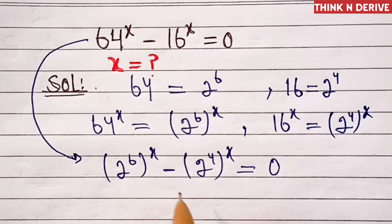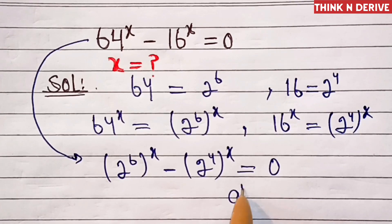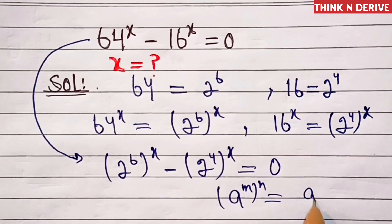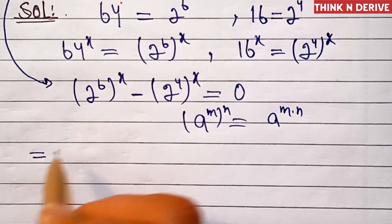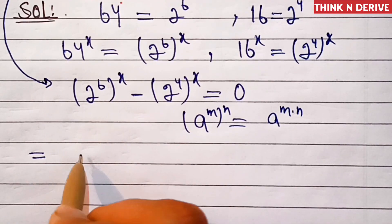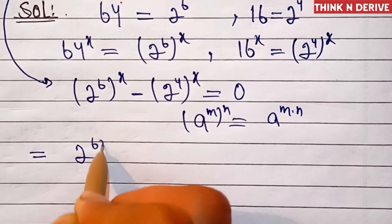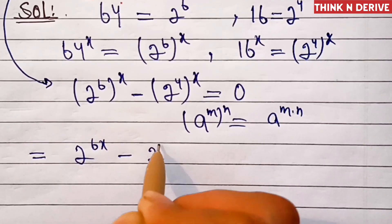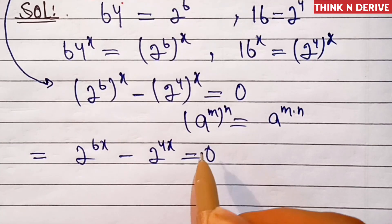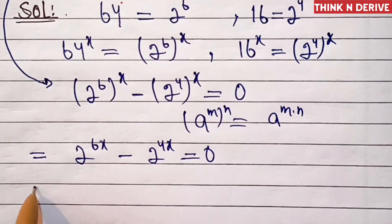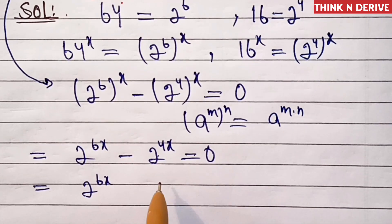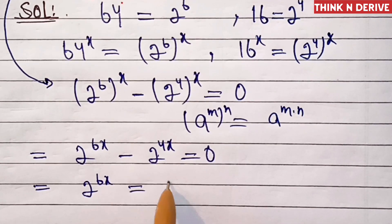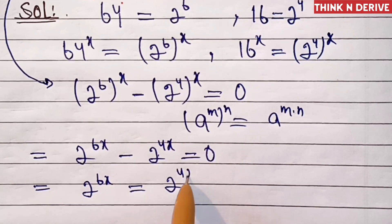Now we'll use a rule here: a power m whole power n is equal to a power (m into n). So this will become 2 power 6x minus 2 power 4x equal to 0. Now this is 2 power 6x; transpose this to the right hand side, so this will become 2 power 4x.